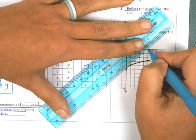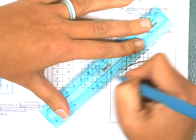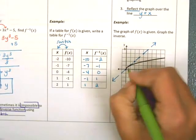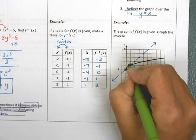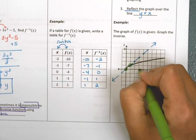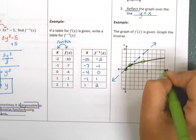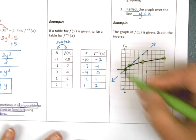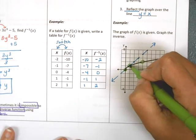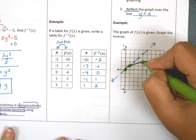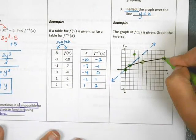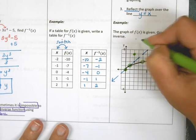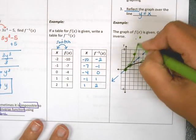The line over which we reflect is y = x. If I find nice ordered pairs on the original — going through (0,0), (1,1), (4,2), and (9,3) — and reflect those over y = x, then (0,0) stays, (1,1) stays, (4,2) becomes (2,4), and (9,3) becomes (3,9), which would be way up here. So the new reflected graph is the inverse.